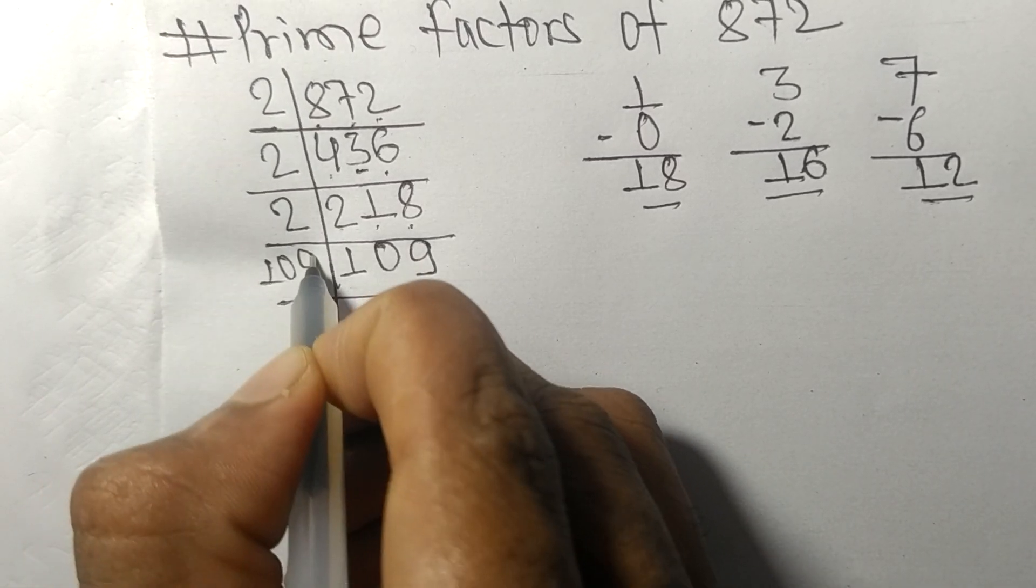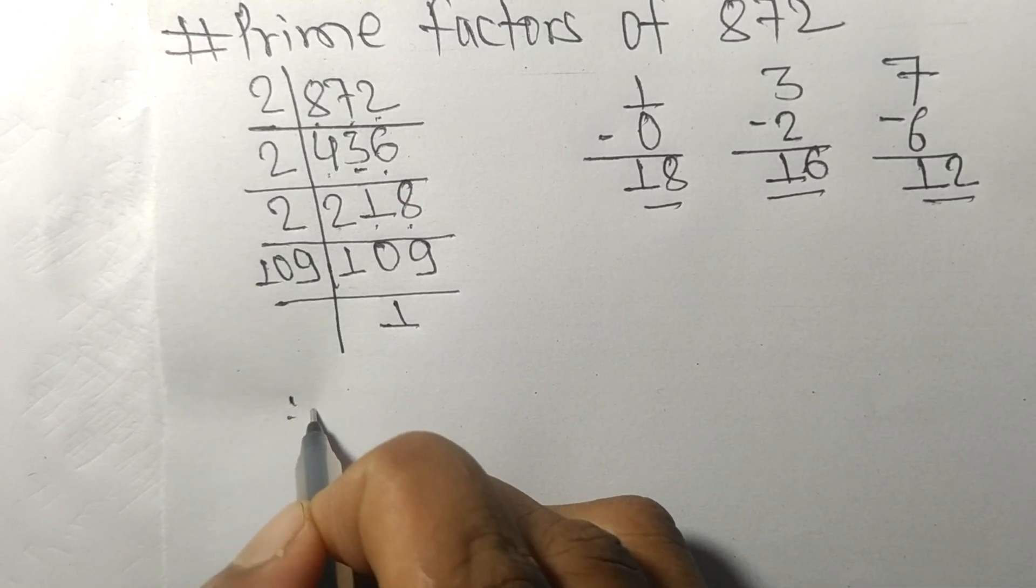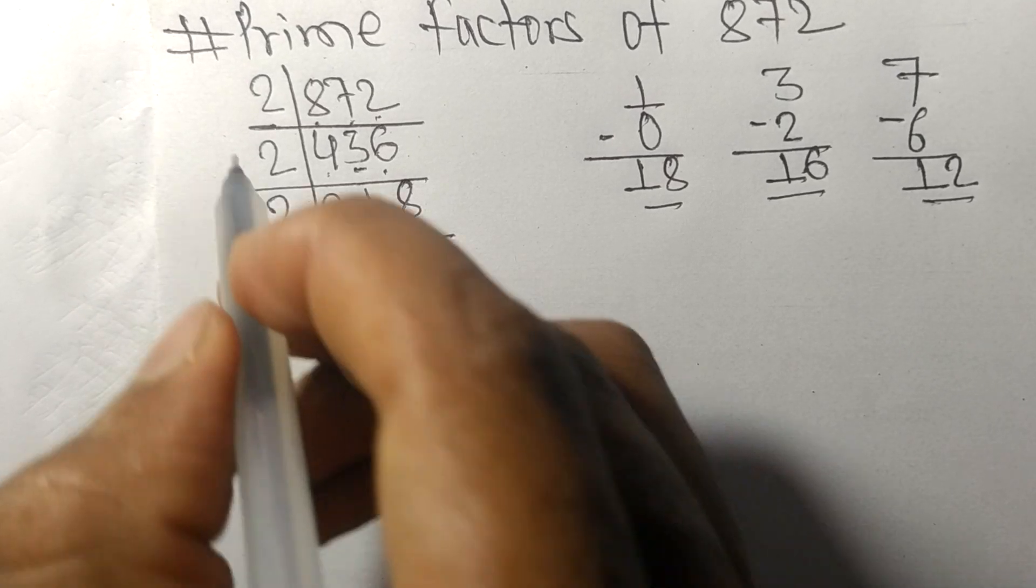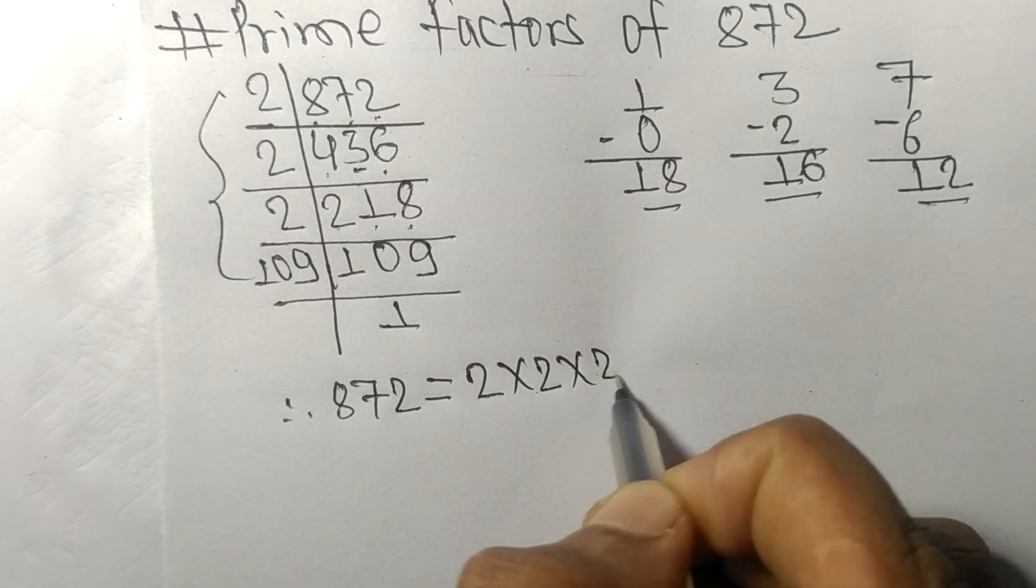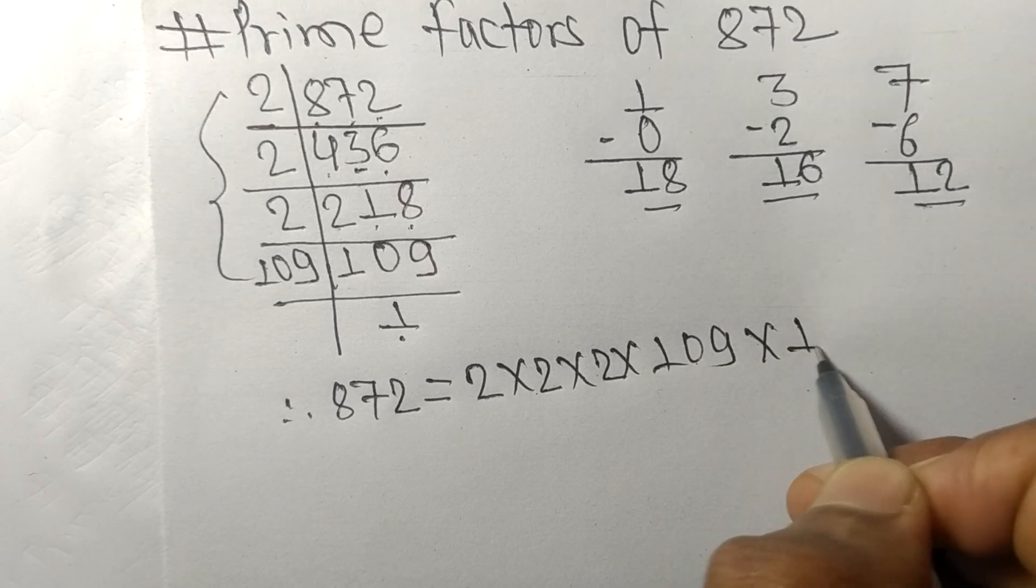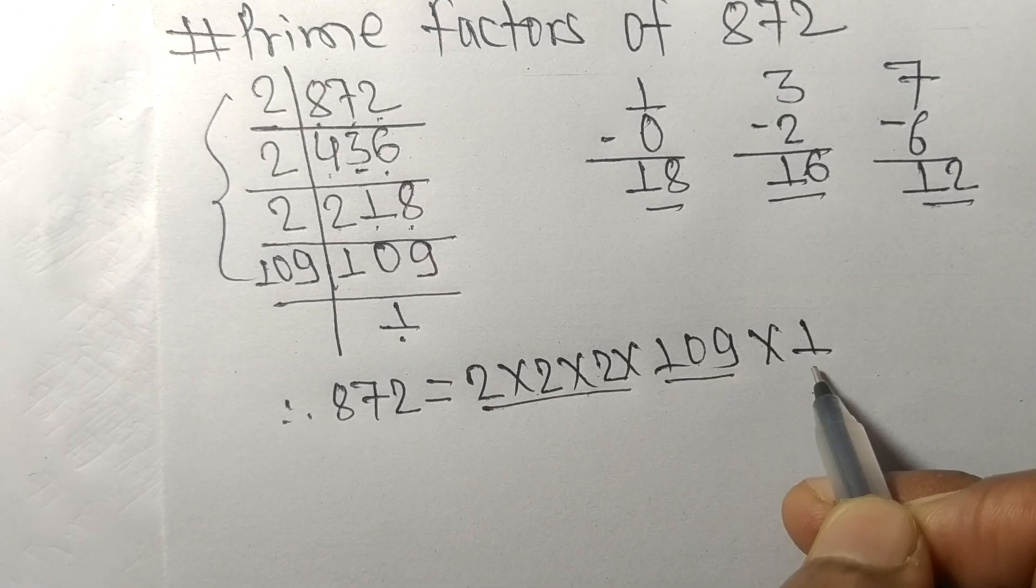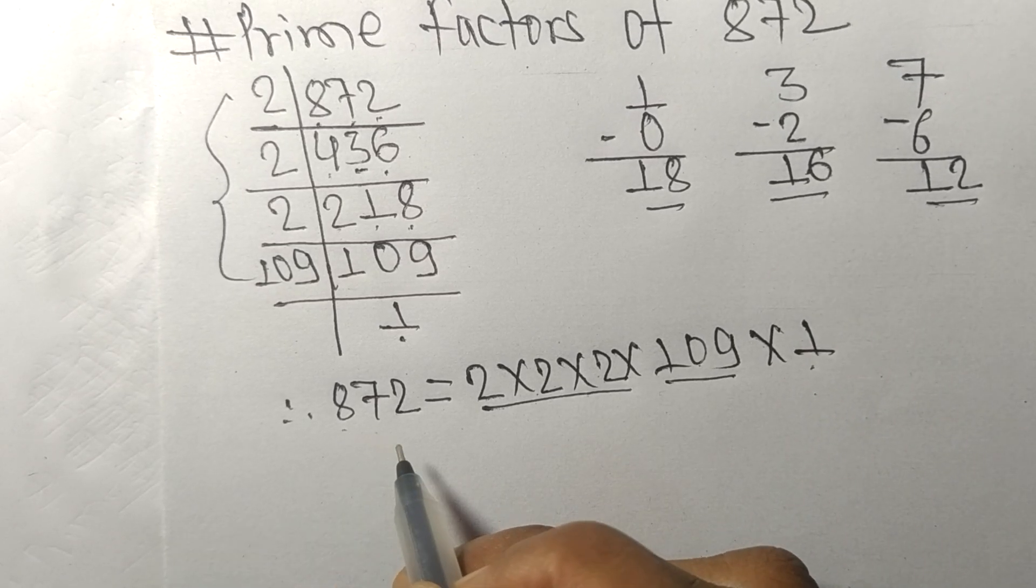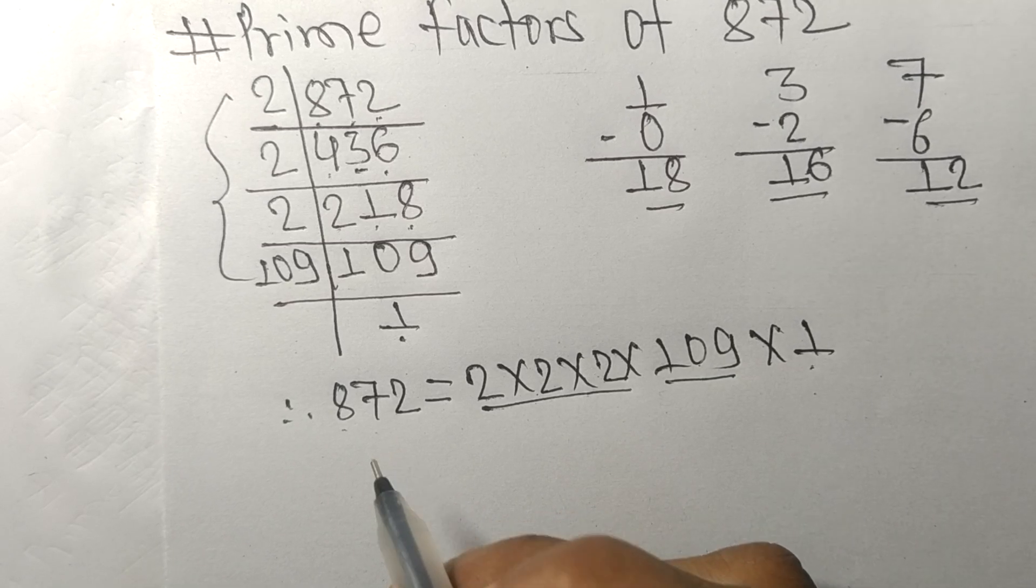On dividing we get 1. Therefore 872 is equal to 2 times 2 times 2 times 109. From here we get 1. So 2, 109, and 1 are the prime factors of 872. So this much for today. Thanks for watching.